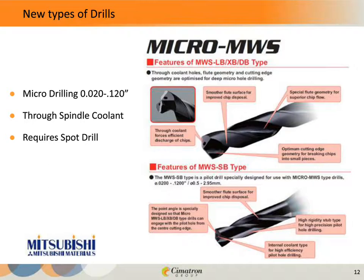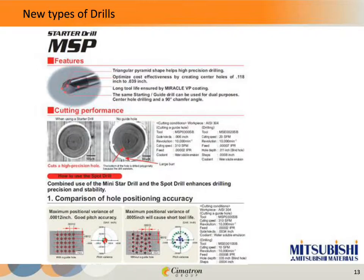On the next page, for a six-thousandths diameter drill, the picture on the left shows that a spot drill was used and the hole was kept on center — it's a nice round hole. On the right, without a spot drill, you can see the outside of the hole is not very nice and not very round. The chart below shows the positional accuracy. If you're dealing with a really small drill, you're probably going to need to center drill it if you want accurate location and diameter.